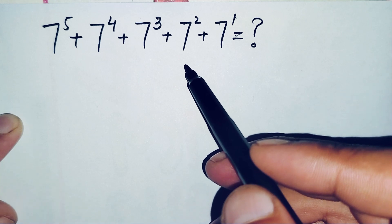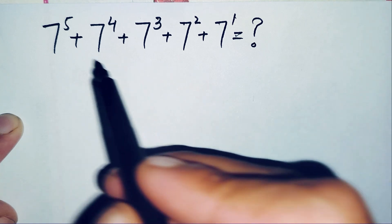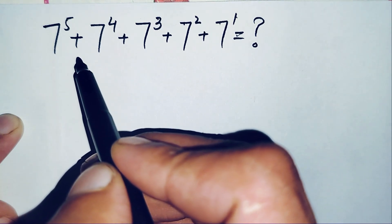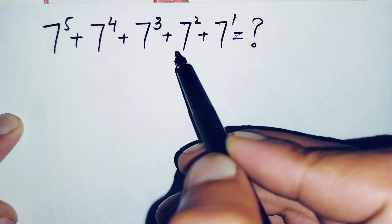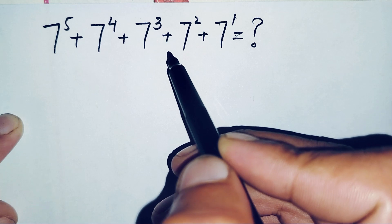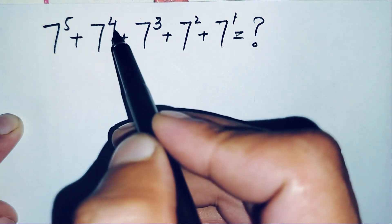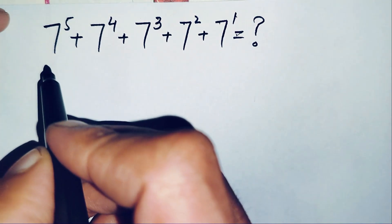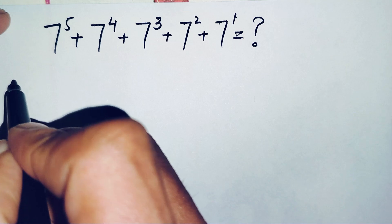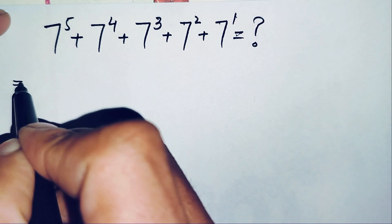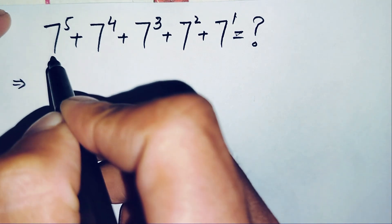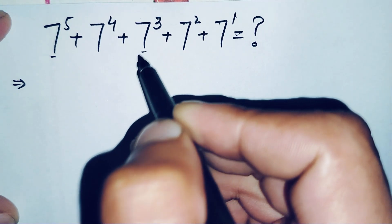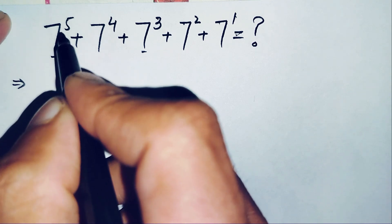First of all, we will try to make certain pairs of terms the same by making their powers equal. So we will do some changes in the powers of these numbers.